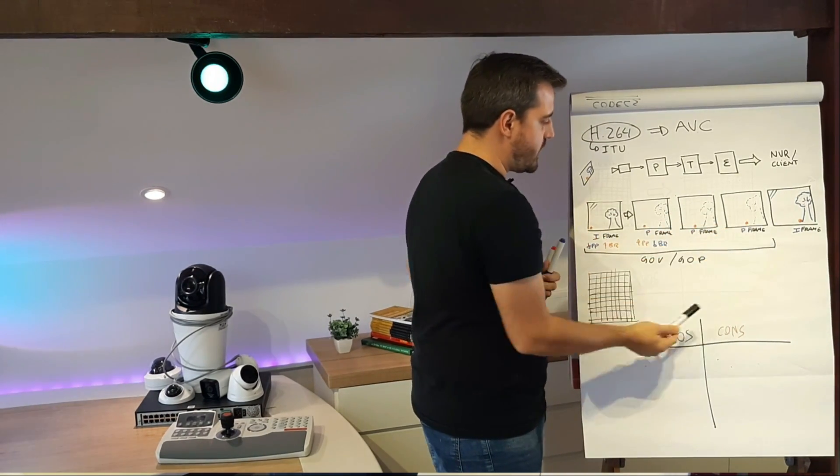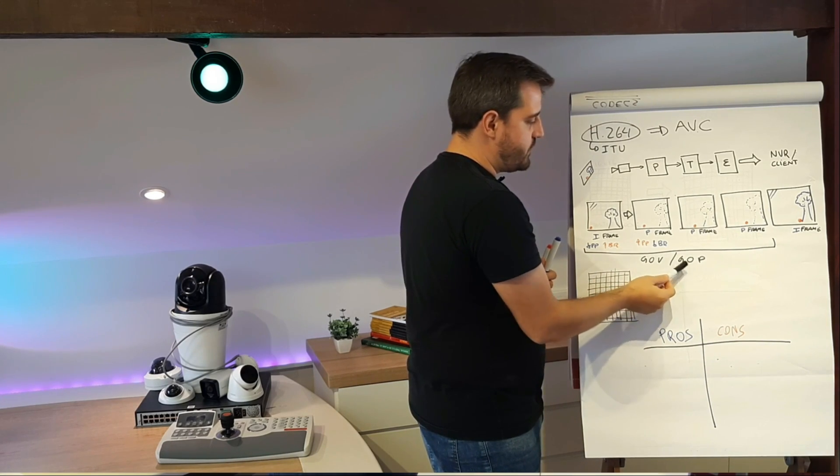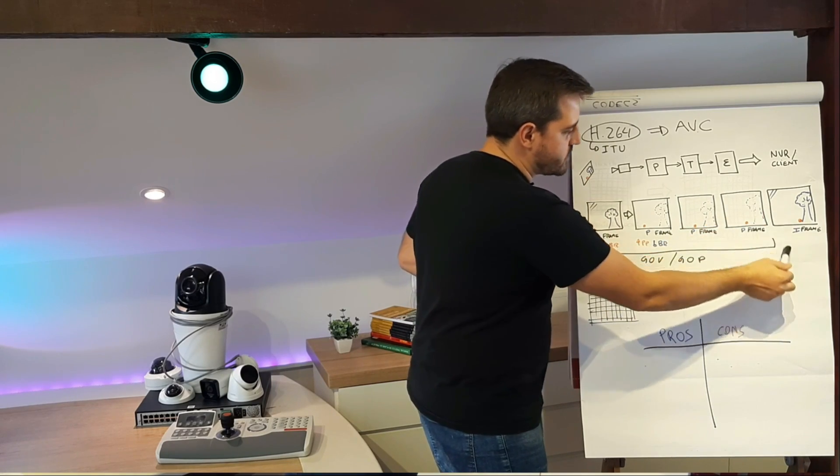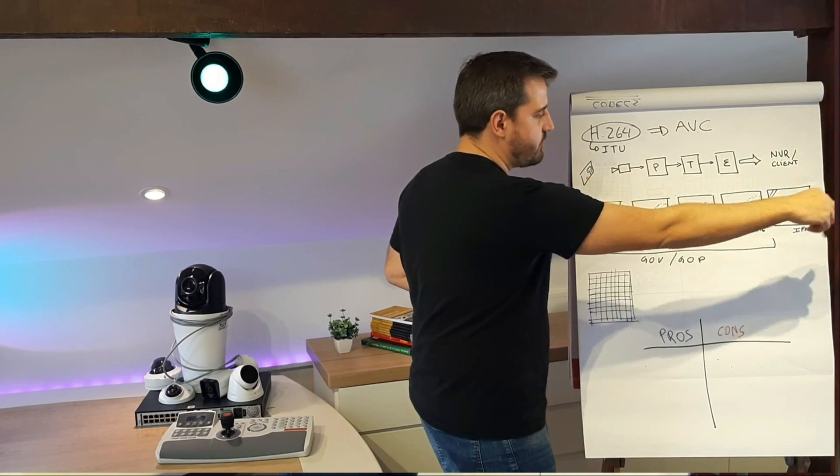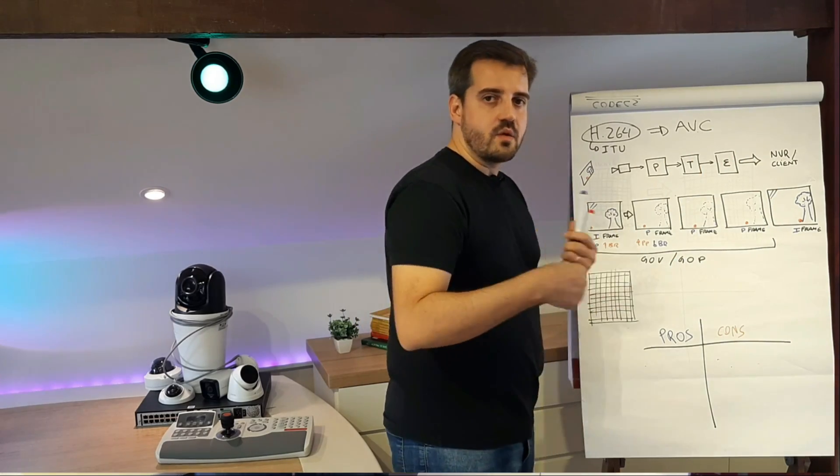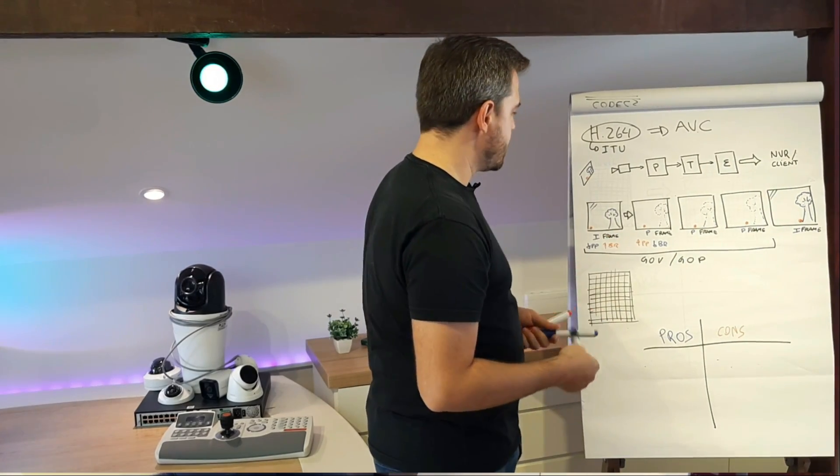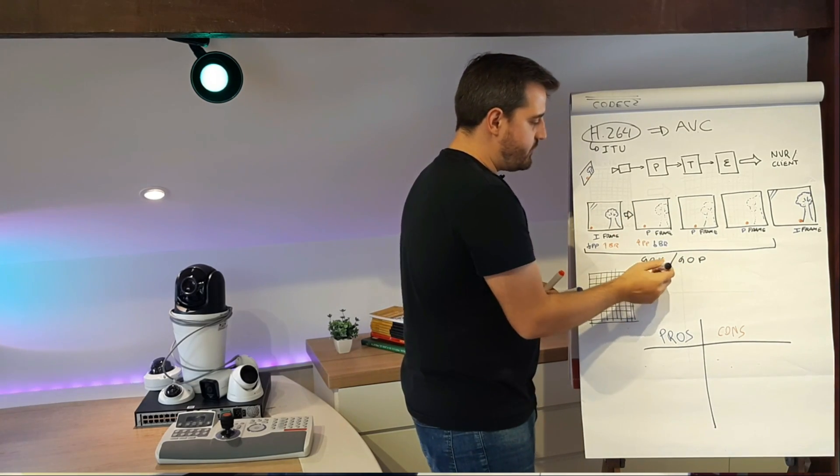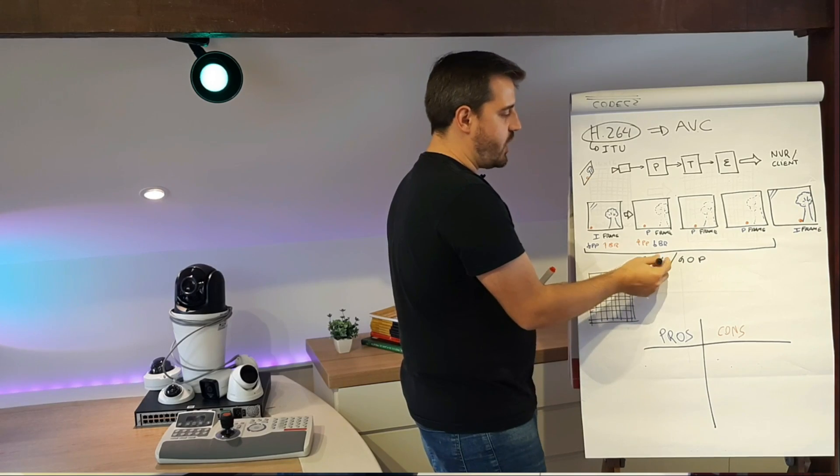In this example we are setting a GOP as four - one I-frame and three P-frames. Then it will start again with the next I-frame and send more three P-frames, and so on. So this is how it looks like. What happens if we set this value too high?